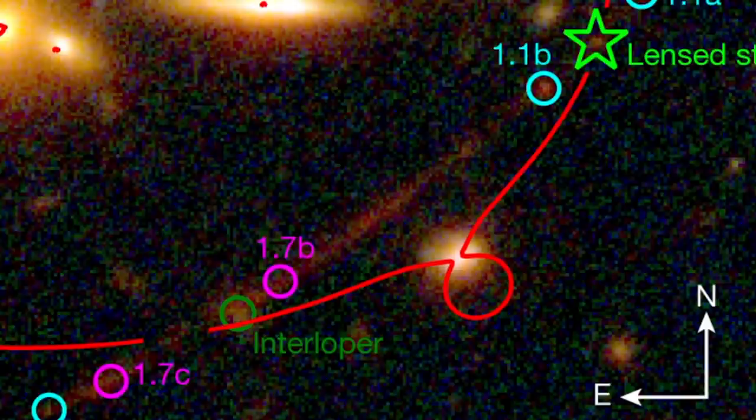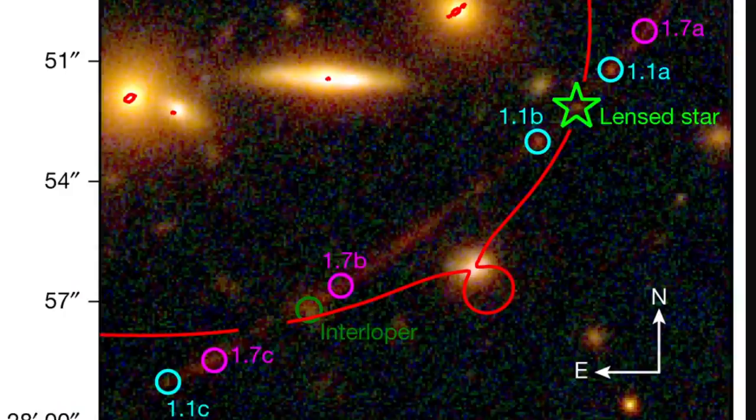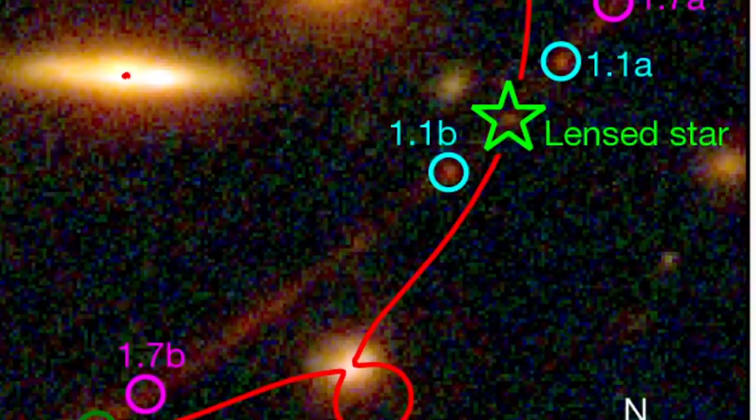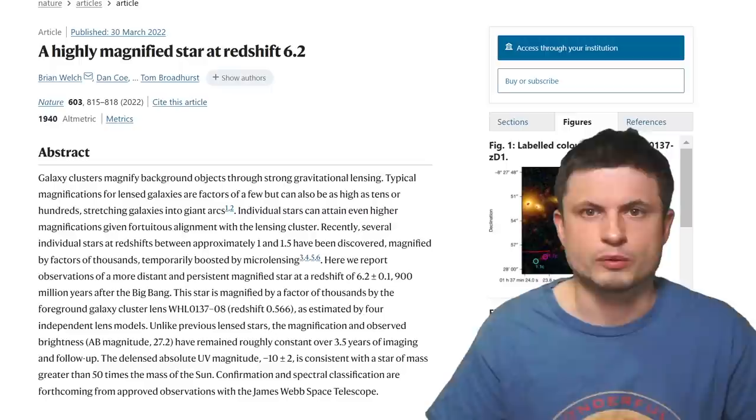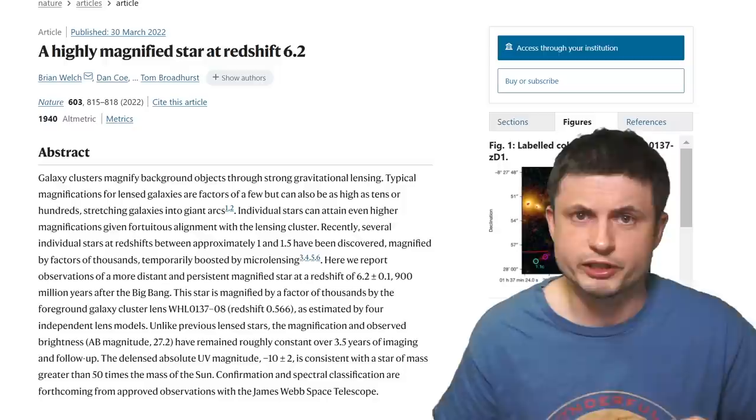They used a foreground galaxy cluster, extremely massive cluster, known as WHL0137-08, a cluster that's about 7.8 billion light years away from us, the one that you actually see right here, to discover something extremely unusual in one of the parts of the ring that it formed. Or actually, it wasn't really unusual at first, it only became unusual later. They discovered an object that you see right there, that seemed to be magnified by a factor of a thousand, suggesting of course that this was an extremely distant object.